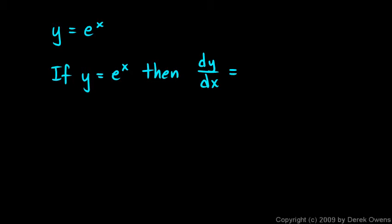We'll begin with this function, y equals e to the x. And it turns out that this function has an absolutely amazing property. And that's this. We can say that if y is equal to e to the x, then the derivative of that dy dx is equal to e to the x. How about that? The function is its own derivative.